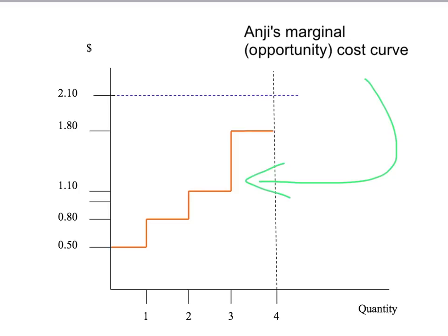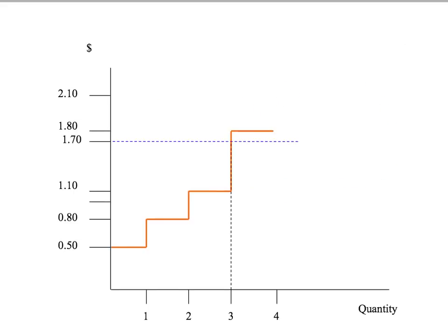Let's draw Angie's marginal cost curve again and ask: suppose the price of apples is $2.10 per apple, how many apples would Angie like to sell? She'd be very happy to sell a first apple — she's willing to accept $0.50, so $2.10 is much more. She'd sell a second apple since $2.10 exceeds her marginal cost of $0.80, a third apple since $2.10 exceeds $1.10, and a fourth apple since $2.10 exceeds $1.80. So at $2.10, Angie sells all four apples — giving us a point on her supply curve.